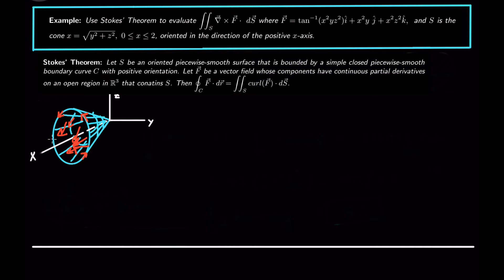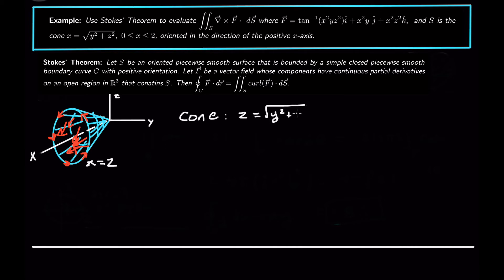So if we walk in the direction of the positive x axis, then our curve will have our surface on our left. What we need to do is walk counterclockwise around this circle as viewed from the direction of the normal vector. If we go this way around the curve, then our head will be in the direction of the normal vector and our surface will be to the left of where we are. So we always walk counterclockwise around the curve with the normal vector in the direction of our head. The curve at this point is the circle at x equals 2. When x equals 2, the cone gives 2 equals square root of y squared plus z squared, so that's a circle of radius 2: y squared plus z squared equals 4. That's the trace of the cone, and that's going to be our boundary curve.